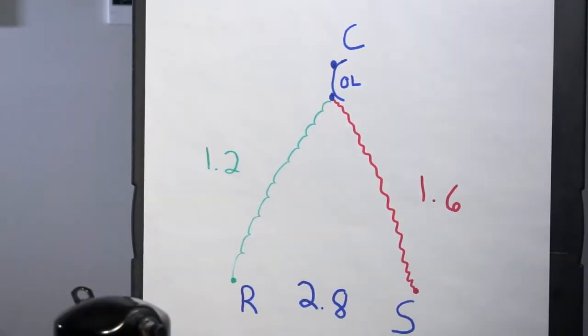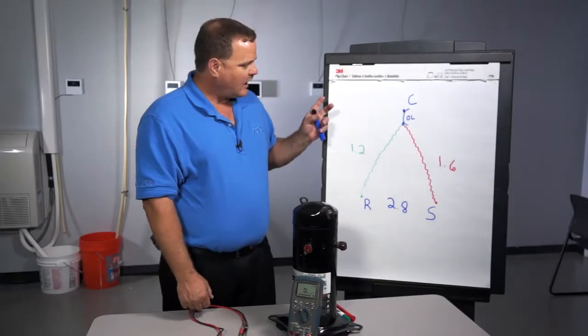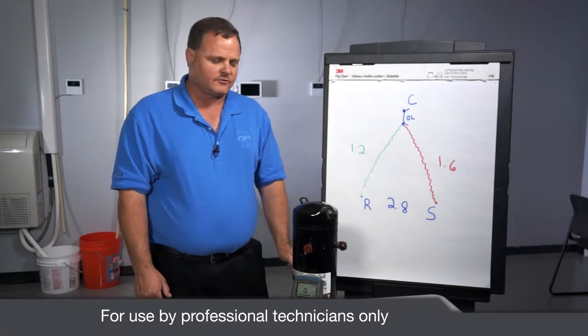what I've always done and makes it easy is draw the terminals out on a sheet of paper. And as you can see here, I've got a drawing of the windings of a compressor.